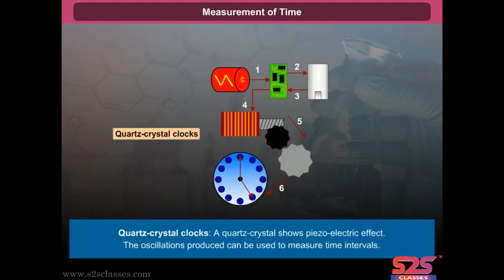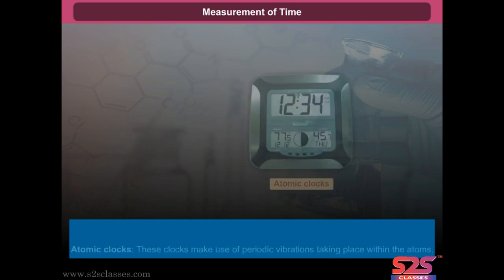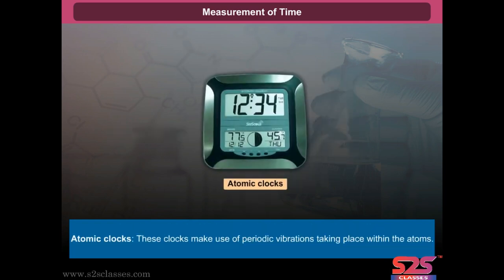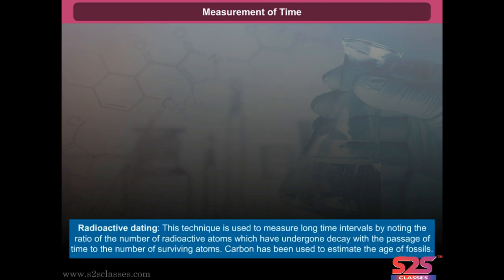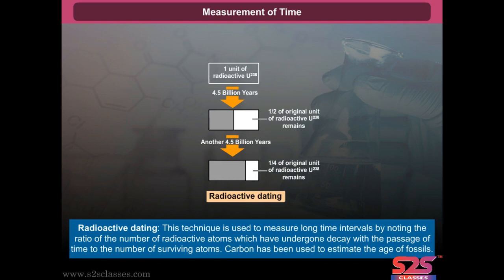Quartz crystal clocks: a quartz crystal shows the piezoelectric effect and the oscillations produced can be used to measure time intervals. Atomic clocks make use of periodic vibrations taking place within atoms. Radioactive dating is used to measure long time intervals by noting the ratio of the number of radioactive atoms that have undergone decay to the number of surviving atoms. Carbon has been used to estimate the age of fossils.